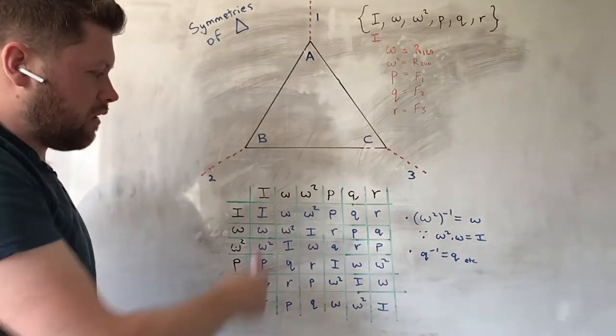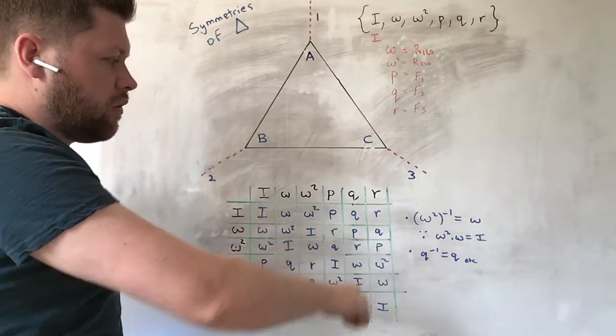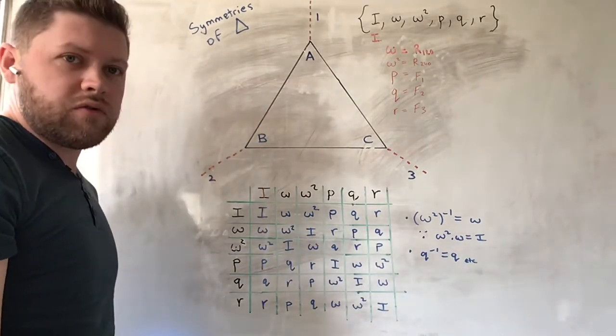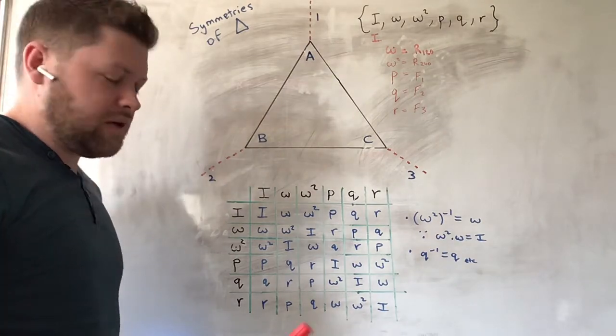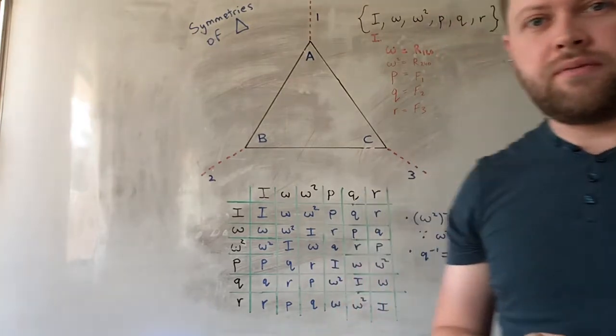But you can see that it's a closed set. At no point are any of the combinations going outside of the original set. So, it is a closed set, which means that it satisfies the first condition for being a group.